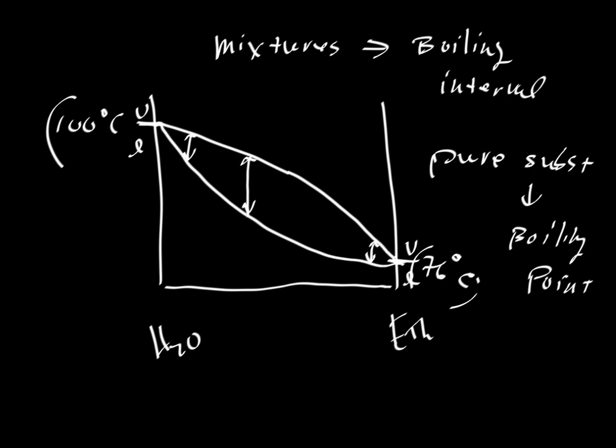This is at about X sub E equals 0.25, more or less. If we have this composition and this temperature here, we would have a mixture of liquid plus vapor. The system will begin boiling here. That's the beginning of the boiling interval. It would end boiling here. So that's the boiling temperature interval shown here.